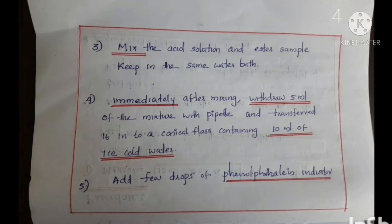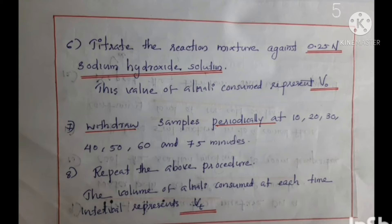Immediately after mixing, withdraw 5 ml of the mixture with a pipette and transfer it into a conical flask containing 10 ml of ice cold water. Add a few drops of phenolphthalein indicator into that mixture. Then titrate the reaction mixture against 0.25 normal sodium hydroxide solution. The value of alkali consumed at this point represents V0, the initial titration volume.